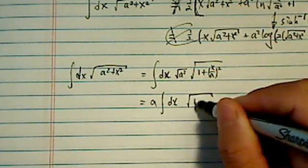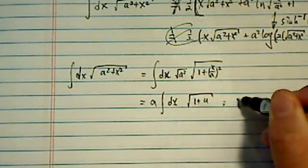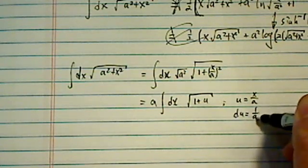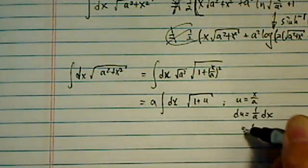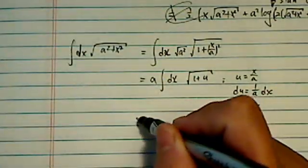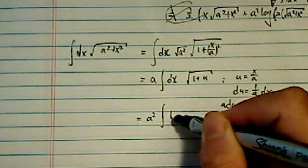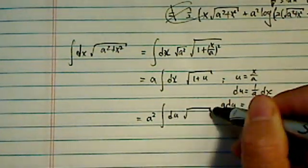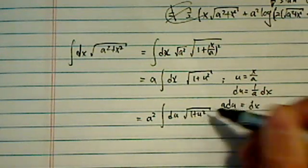Now a is going to come out and then dx over here. And then I have one plus, I'm going to substitute it here, u equal to x over a, du is equal to one over a dx, or dx is equal to a times du. It's just a simple substitution over there. Then I have a squared du over here, one plus u squared.